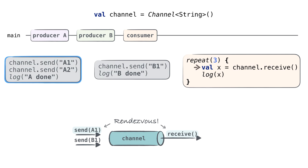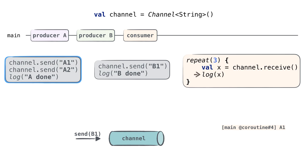The producer A coroutine gets awakened. However, since the thread is still busy, the coroutine is only scheduled to be executed later. We'll mark it with blue highlighting, meaning that this coroutine is ready to be resumed. Now receive returns the A1 value and on the next line it gets printed.